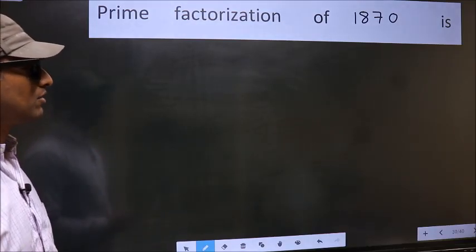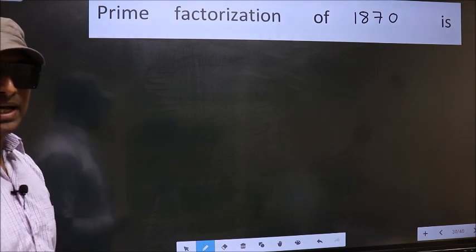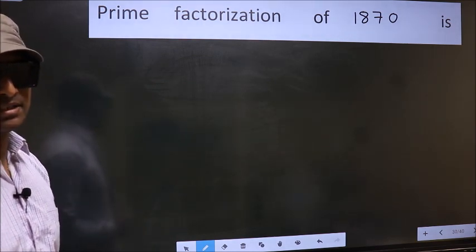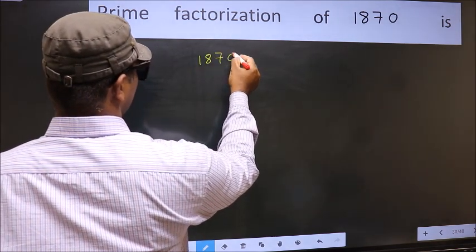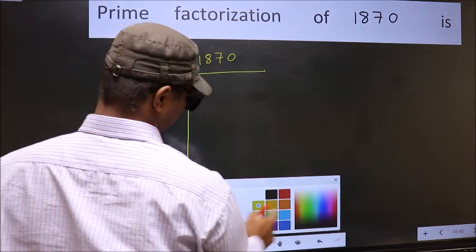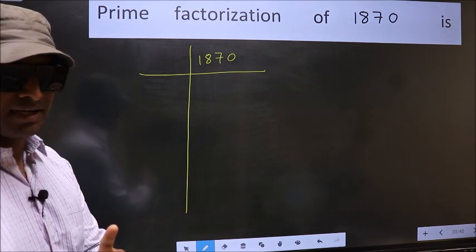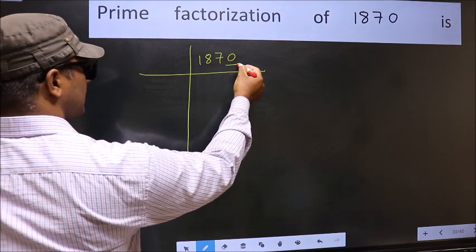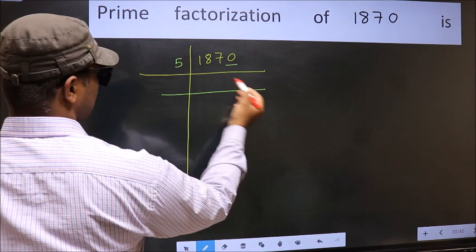Prime factorization of 1870. To do prime factorization, first we should frame it in this way: 1870. This is your step 1. Next, in this number the last digit is 0, so take 5. First number, 1.